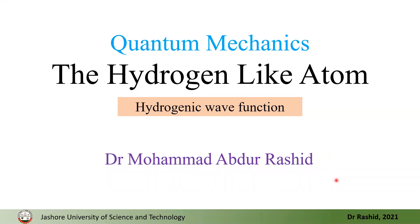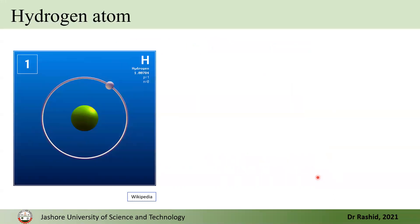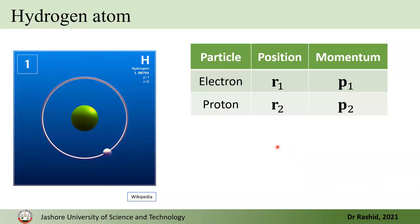Salaam Alaikum. We are talking about the hydrogen atom. In the last video we talked about the variables for the Schrödinger equation and derived it in a new set of variables. We started with a hydrogen atom and said that the position of the electron is denoted by r1 and the momentum of the electron is p1, while the position and momentum for the proton are r2 and p2.